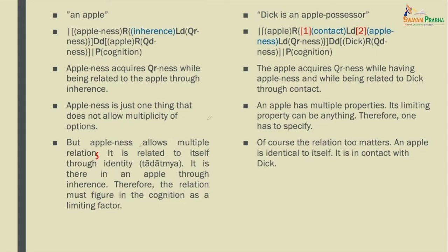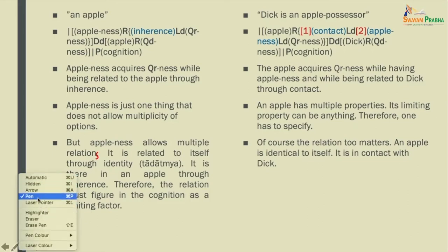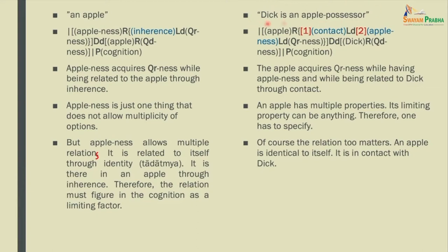But that is not the case in the cognition 'Dick is an apple possessor.' Here the qualifier-ness, which resides in the apple (the qualifier), has got two limiting aspects or factors: one is a relation, and the other is the property apple-ness. It is because the apple acquires qualifier-ness while having apple-ness and while being related to Dick through contact. We are commenting not on the qualifier itself but on what the apple has gained — qualifier-ness — and how it attained that.